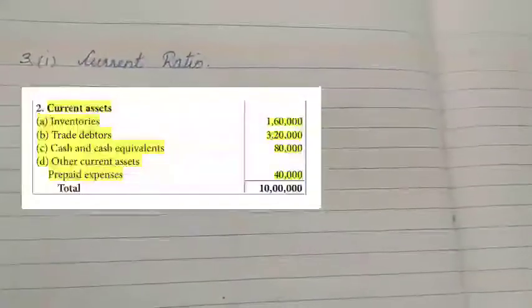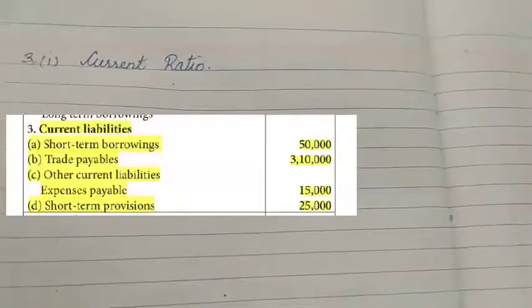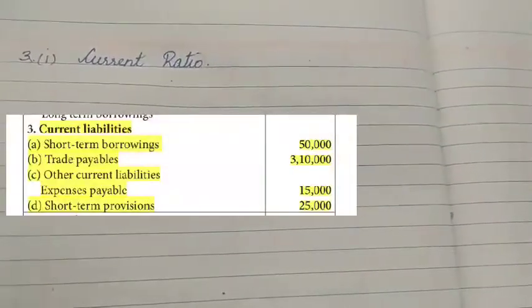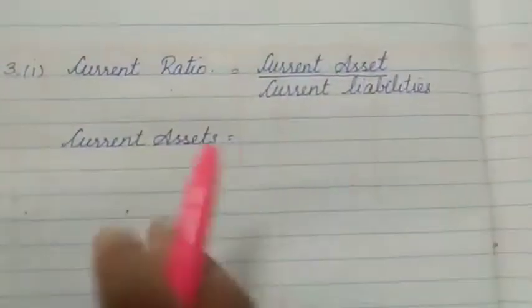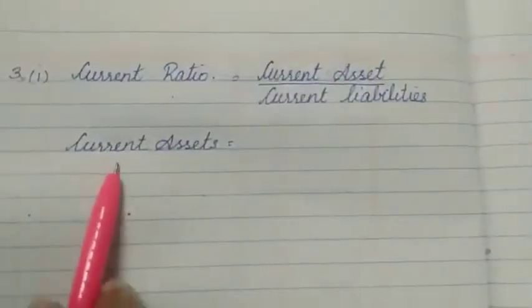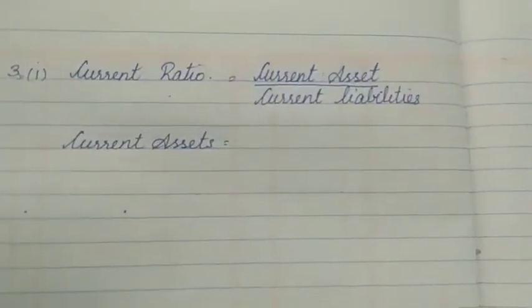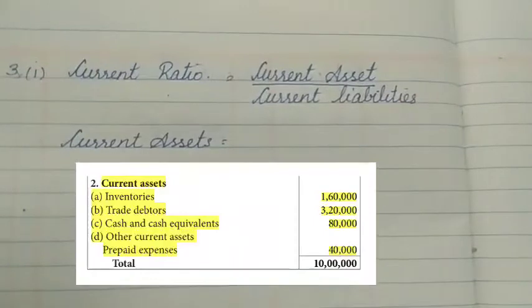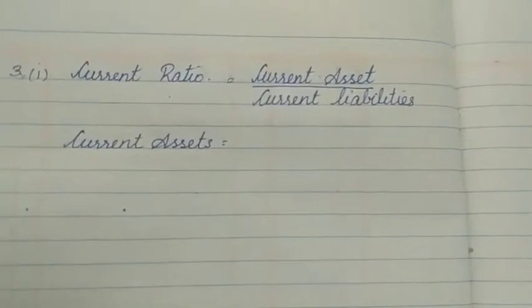If you look into the problem carefully, current assets will be given separately and current liabilities will be given separately. You have to take only those items and put them in. First, write down the formula of current ratio. When I look into the sum, my current assets are the items which are given, so I am going to write them down and add them up.